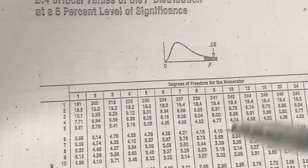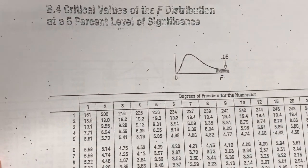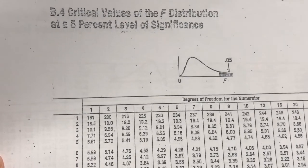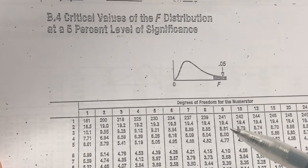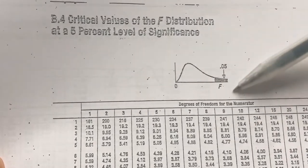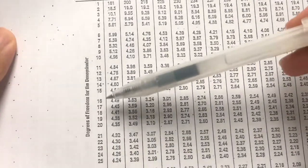So remember just now I mentioned about one of the characteristics is that the F-distribution is characterized by two degrees of freedom. One is the degrees of freedom of the numerator, and here's the degrees of freedom of the denominator.